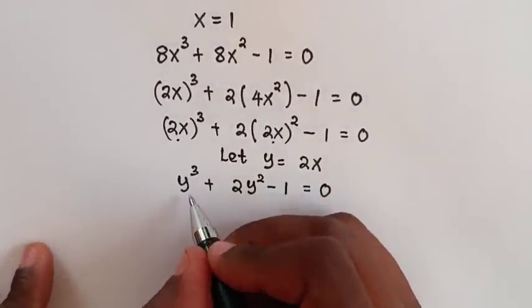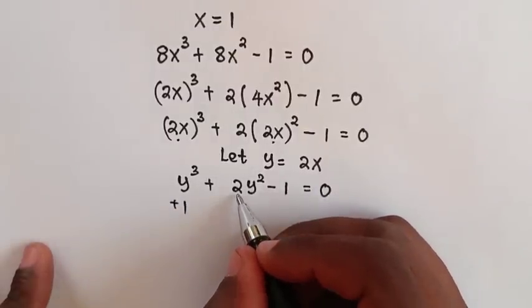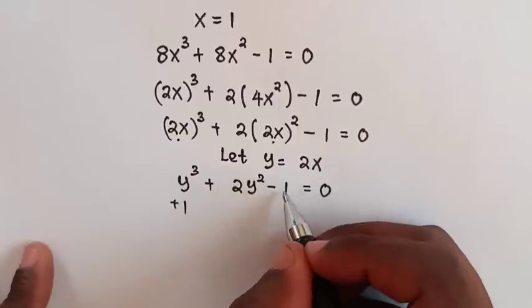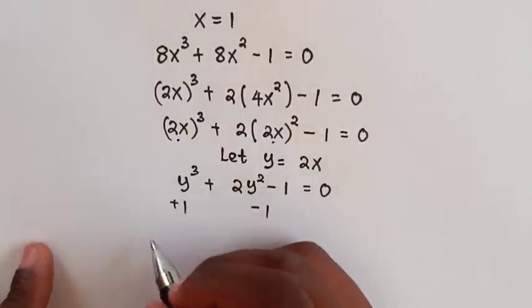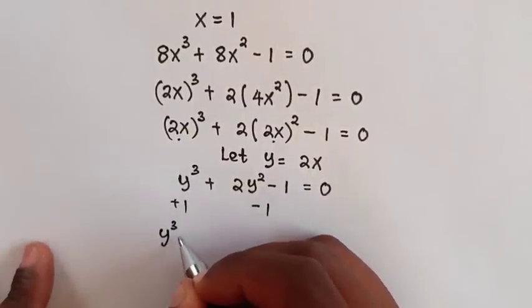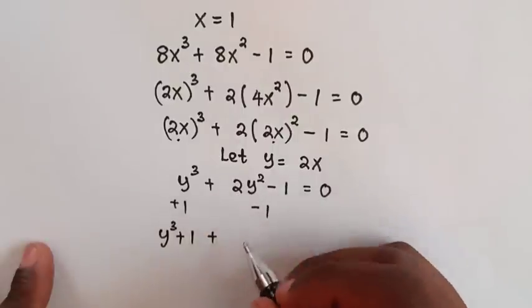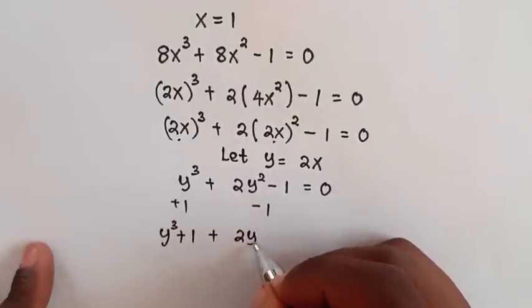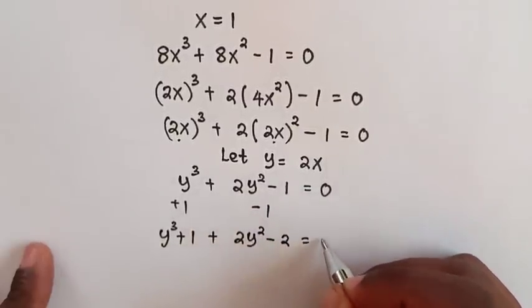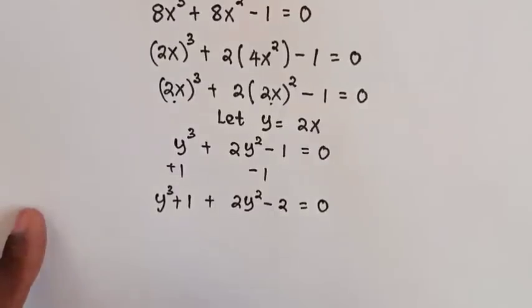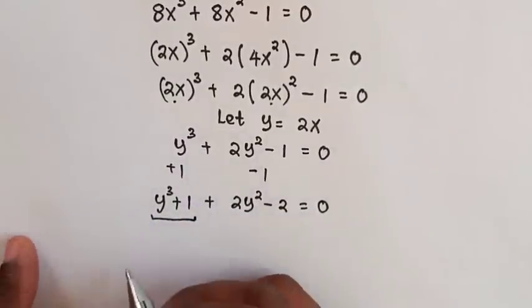Then we are going to add 1 and minus 1. So from here y cubed, we add 1, and here 2y squared minus 1 minus 1. So our equation will be y cubed plus 1 plus 2y squared, then negative 1 and negative 1 is negative 2, is equal to 0.